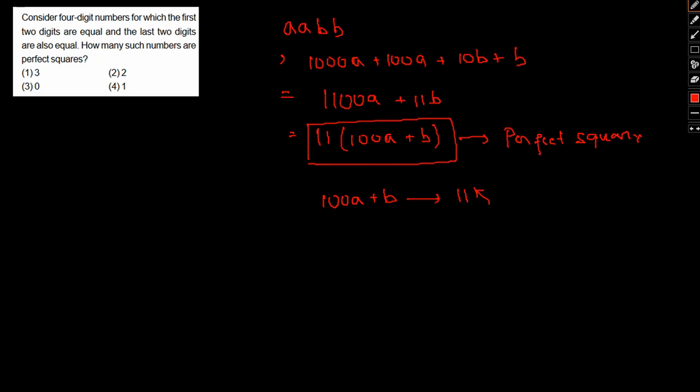So 100a + b should be a multiple of 11. This number will be a three-digit number, a0b. For a number to be a multiple of 11, the sum of the alternate digits has to be a multiple of 11.